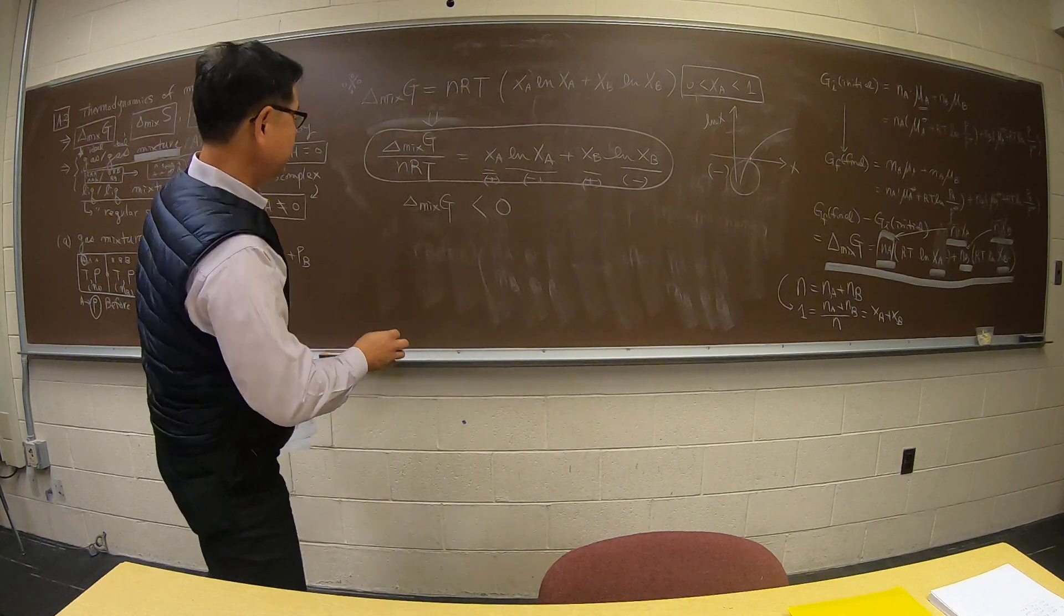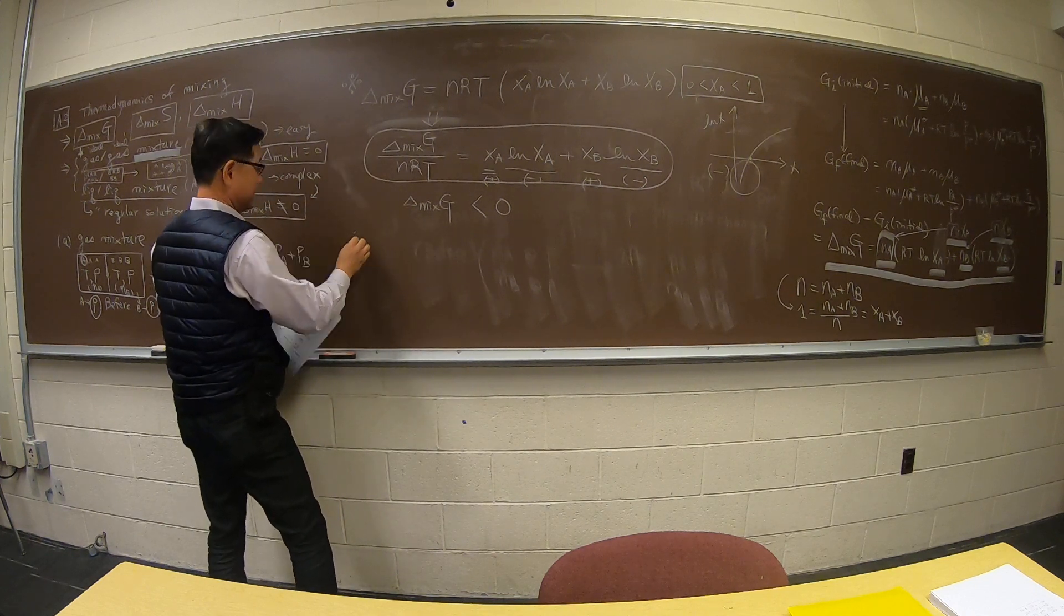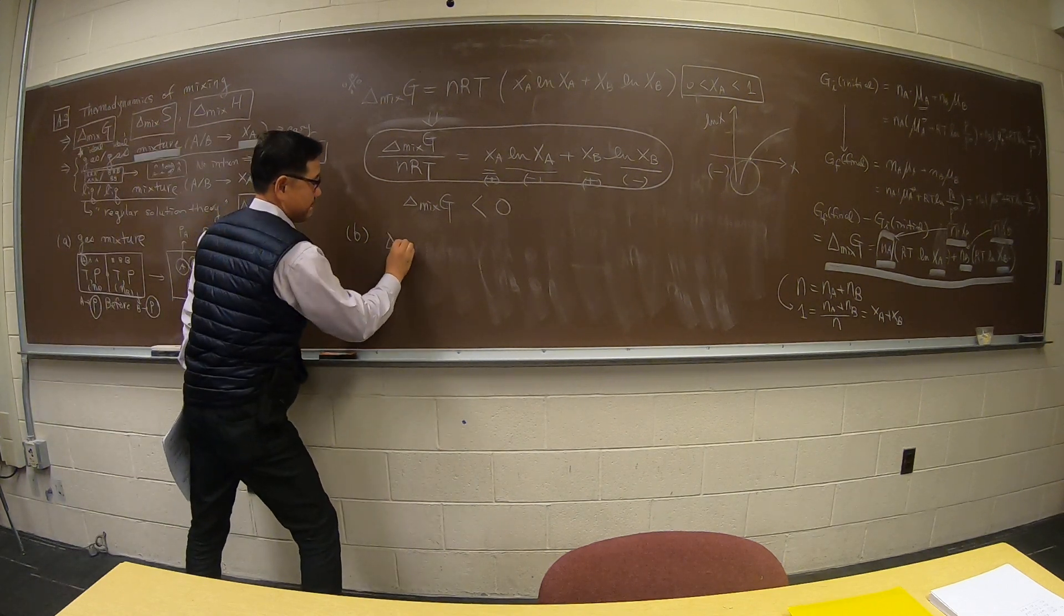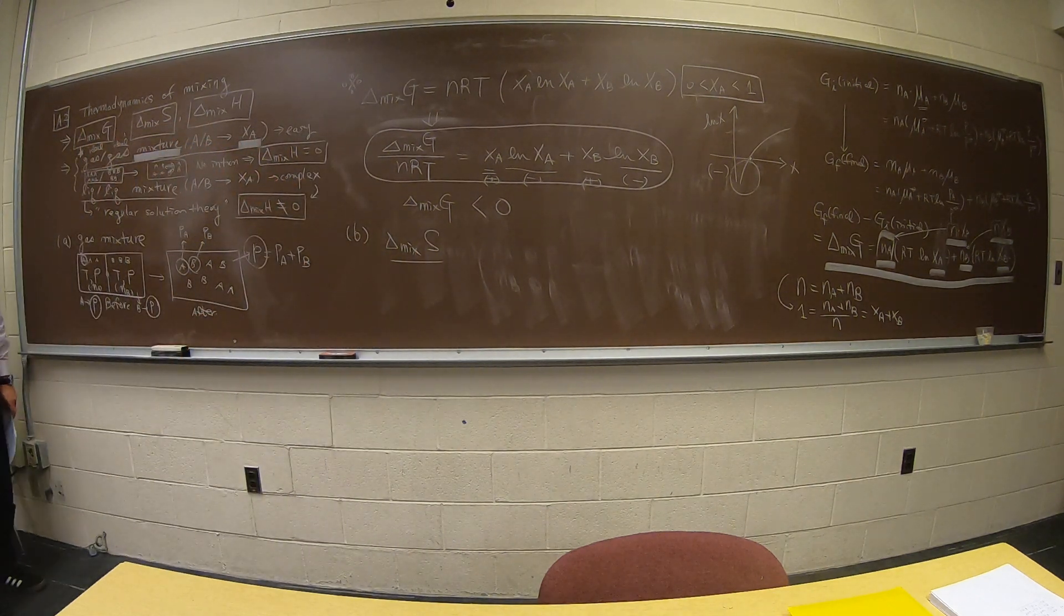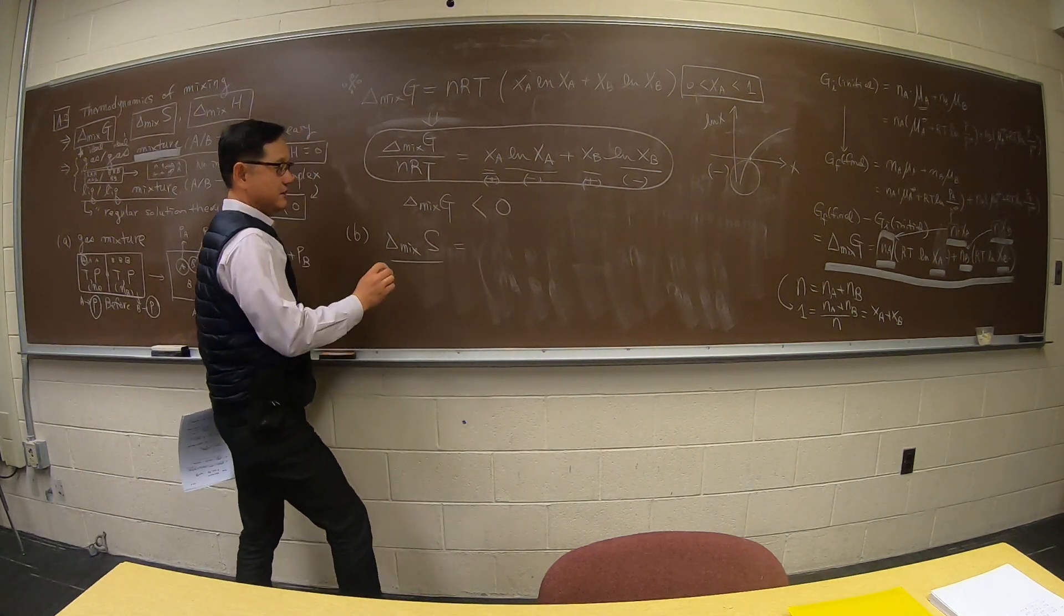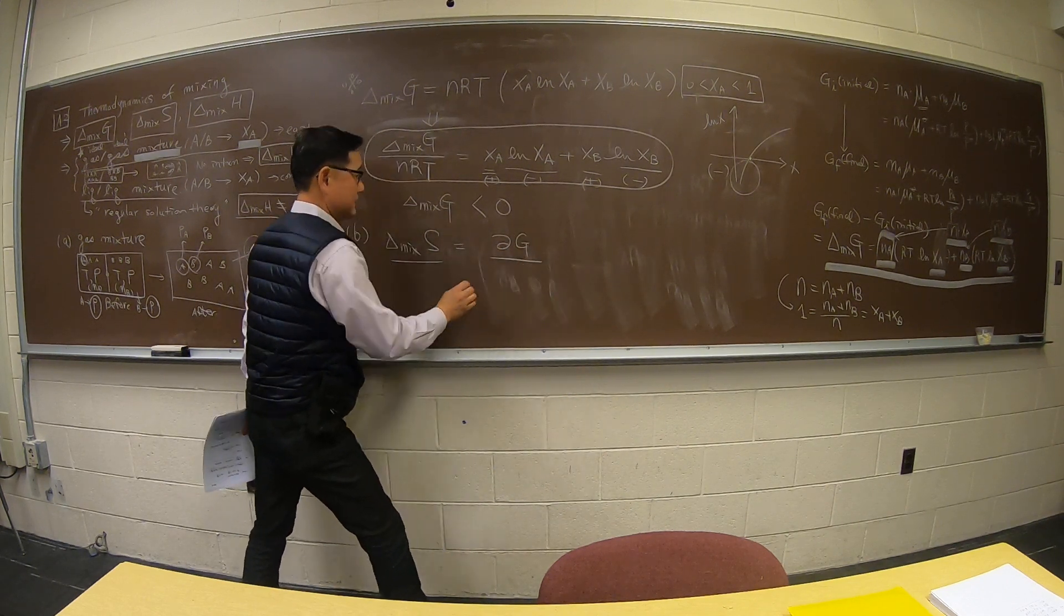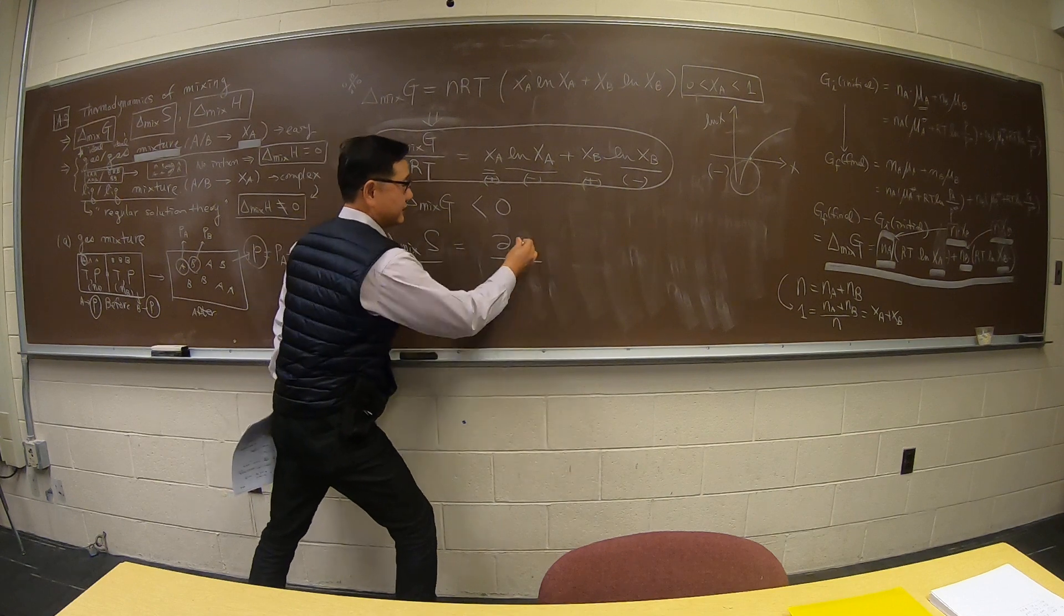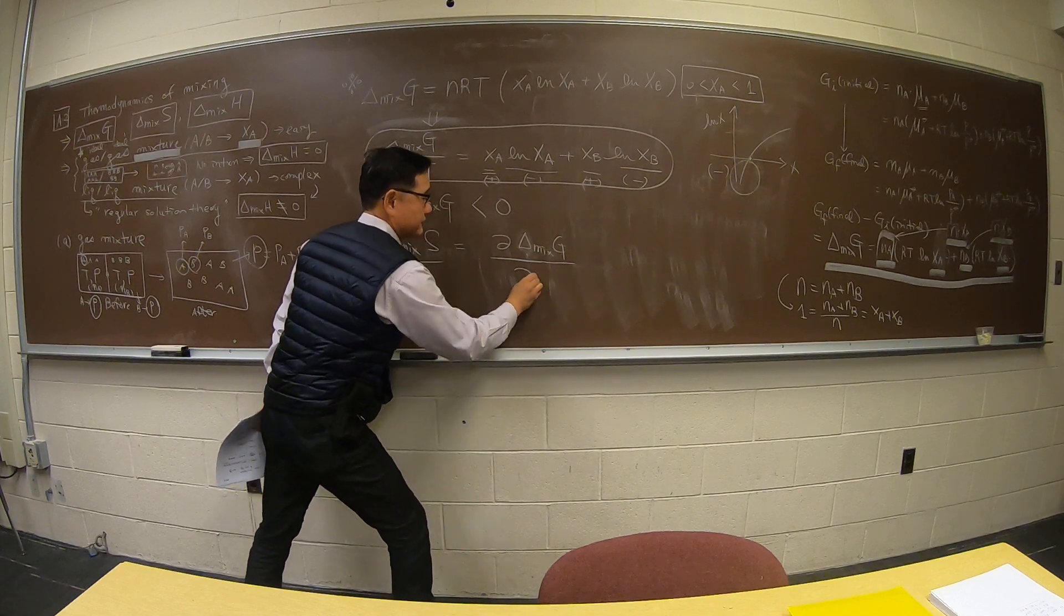I guess I jumped ahead. This is supposed to be our equation. I want to know entropy of mixing, and how do I do that? Entropy of mixing - do you remember? Entropy of mixing is change in Gibbs free energy. Instead of G, I have to use delta G mix, change with temperature.